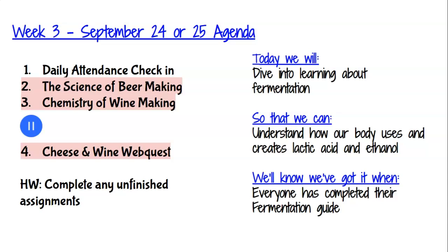The most obvious ways that we do anaerobic respiration is through food and drink. Two of the main drinks are beer and wine, so yes, we are going to be learning about beer and wine and how to make it. We are not going to be making it, of course, because you are all sweet little angels that probably have never even seen beer or wine before in your life. And then we're going to learn about cheese and yogurt and yeast and bacteria and all that good stuff.